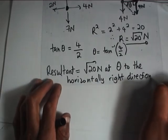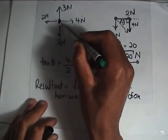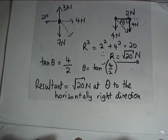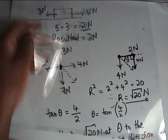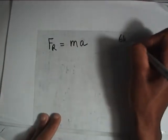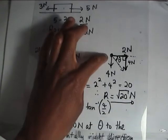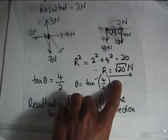These were unbalanced forces, so this object was going to move — at this angle theta to the horizontal direction. Now you may also be asked to find the acceleration. The resultant force is equal to mass times acceleration. Let's say our mass is 6 kg. After you resolve the forces in different directions, as we did here — the vertical components and the horizontal components — we came up with a resultant of root 20 newtons.